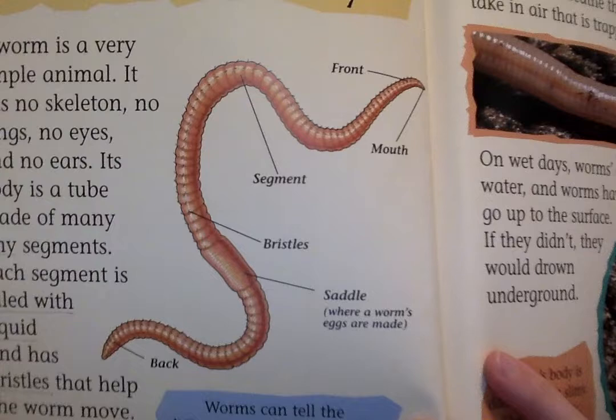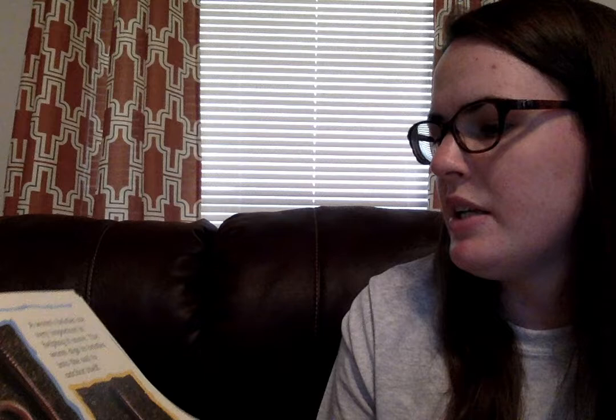Another text feature this book has is diagrams. A diagram labels parts of something so that you know what the parts are called — like this diagram of a worm's body. See the names of those parts. So this book has a table of contents, real photographs, captions, and diagrams.